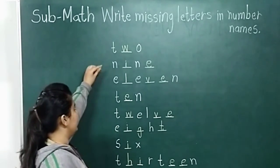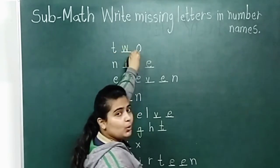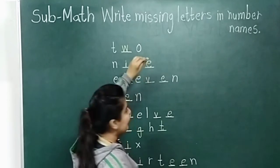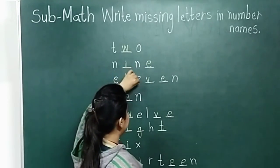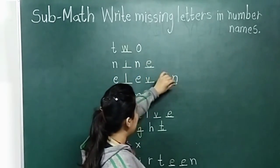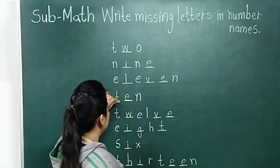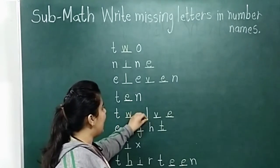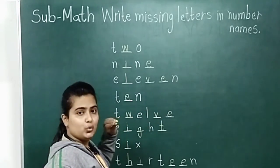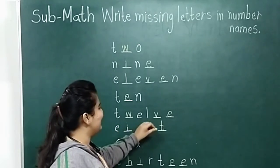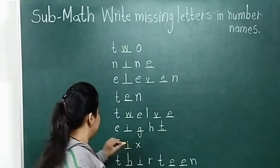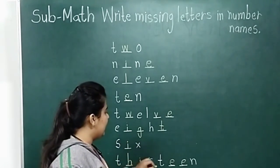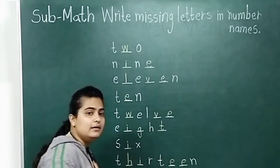Once again, look here. T, W, O — two. N, I, N, E — nine. E, L, E, V, E, N — eleven. T, E, N — ten. T, W, E, L, V, E — twelve. E, I, G, H, T — eight. S, I, X — six. T, H, I, R, T, double E, N — thirteen.